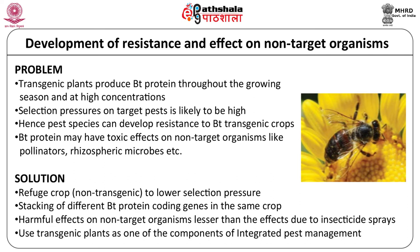The effect of transgenic plants expressing Bt on beneficial insects like pollinators has also been a concern. However, this effect is not restricted only to transgenic crops since spraying of insecticides leads to even more drastic effects on non-target organisms. An acceptable solution in such a case is to make use of transgenic crops as one of the components of integrated pest management.